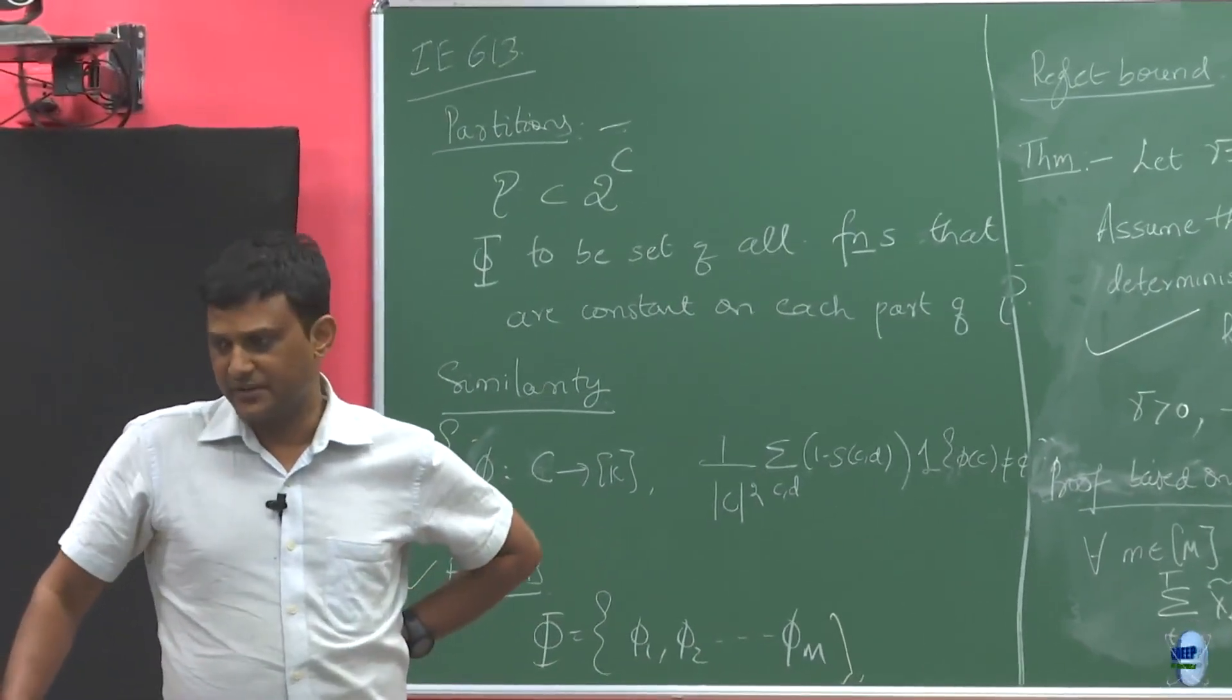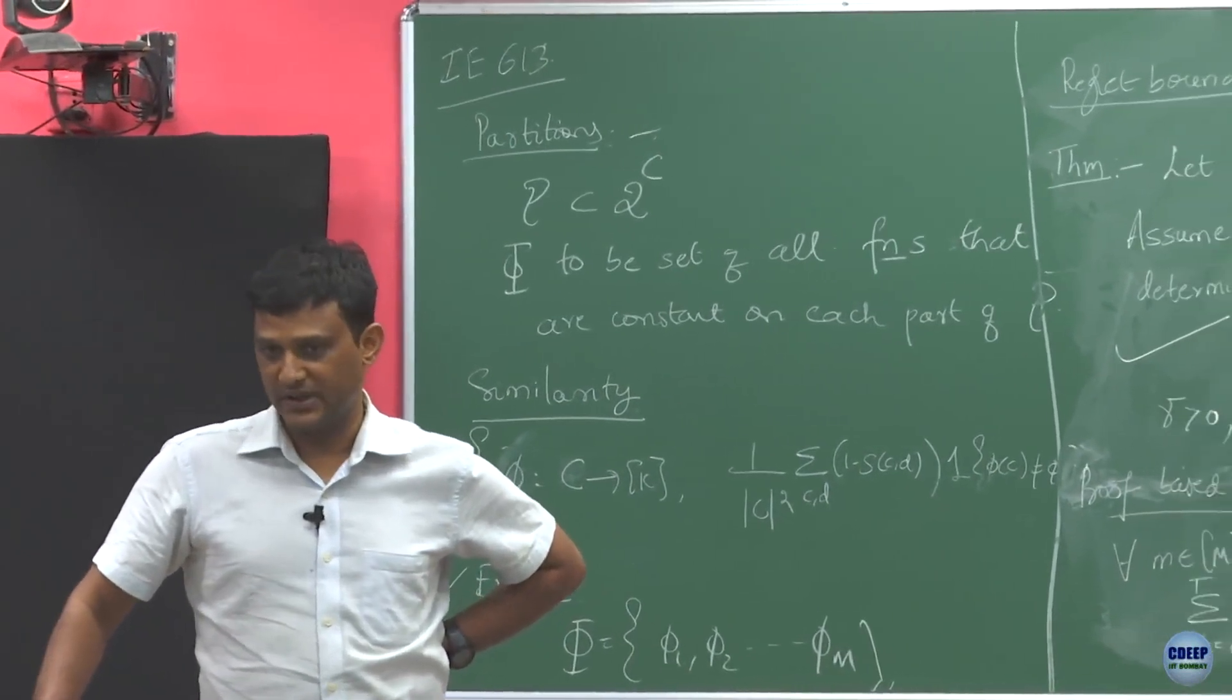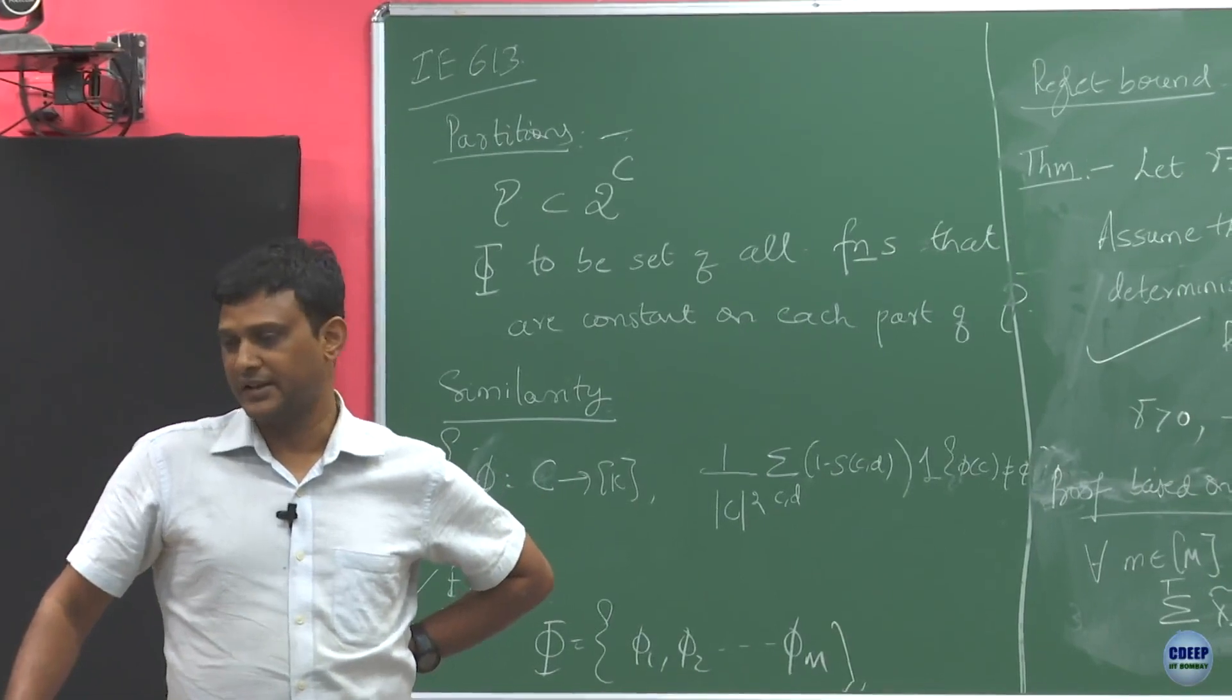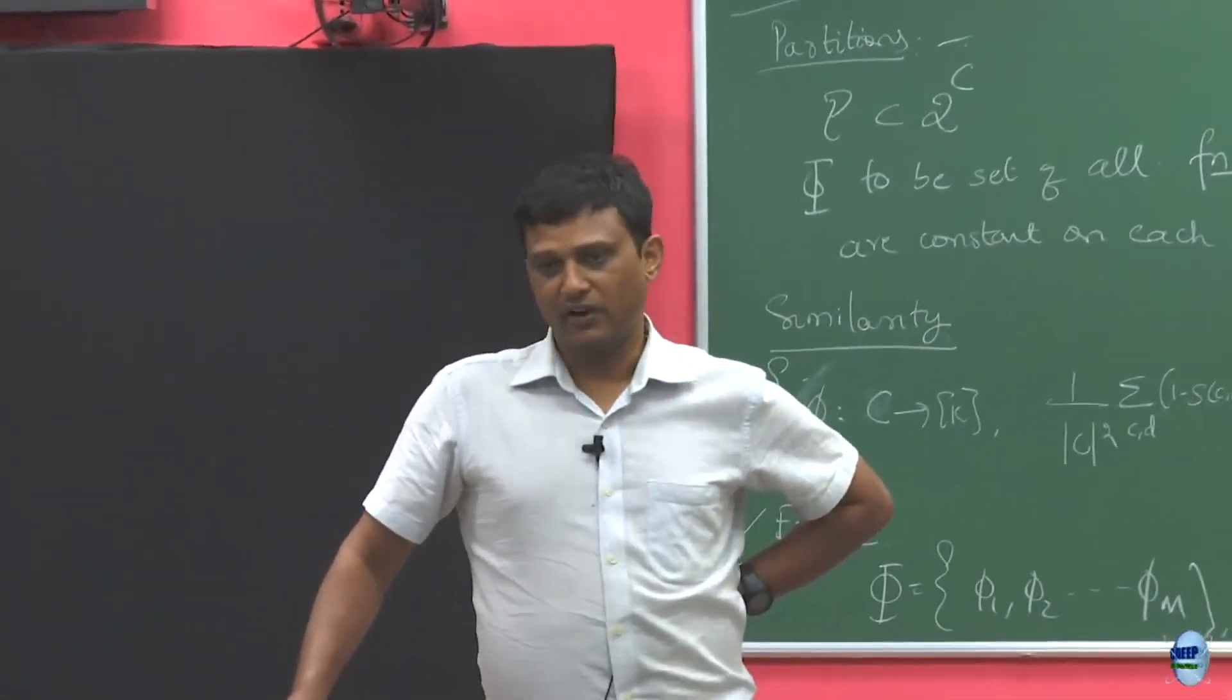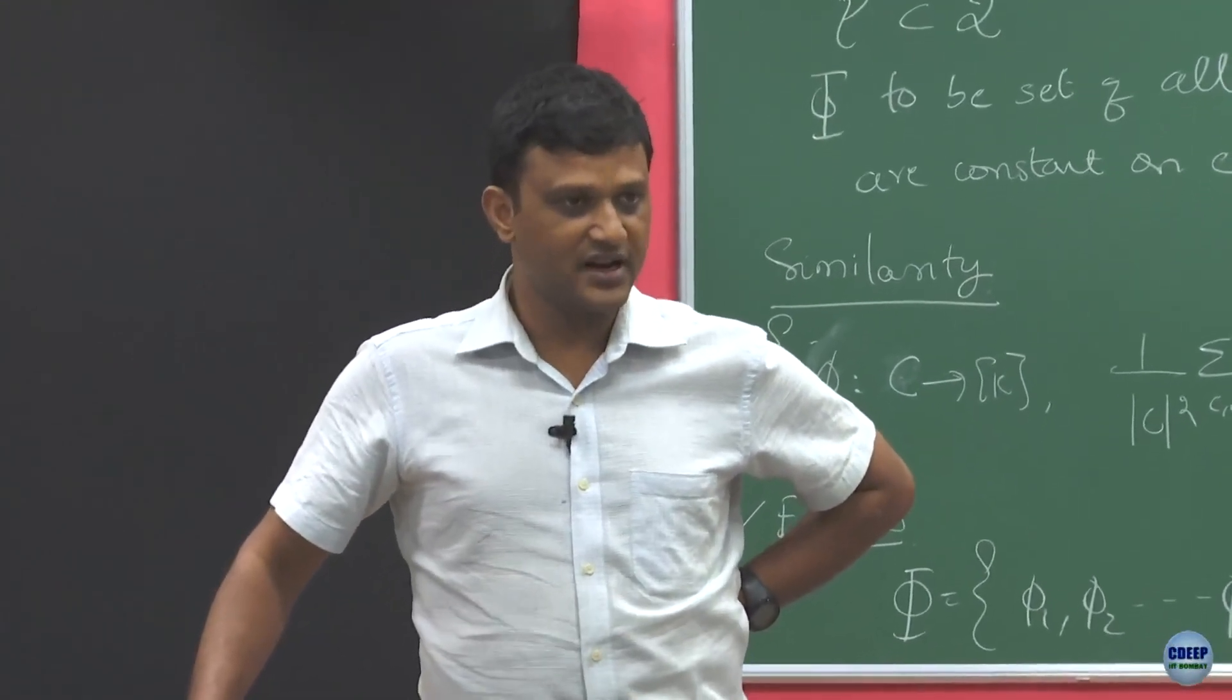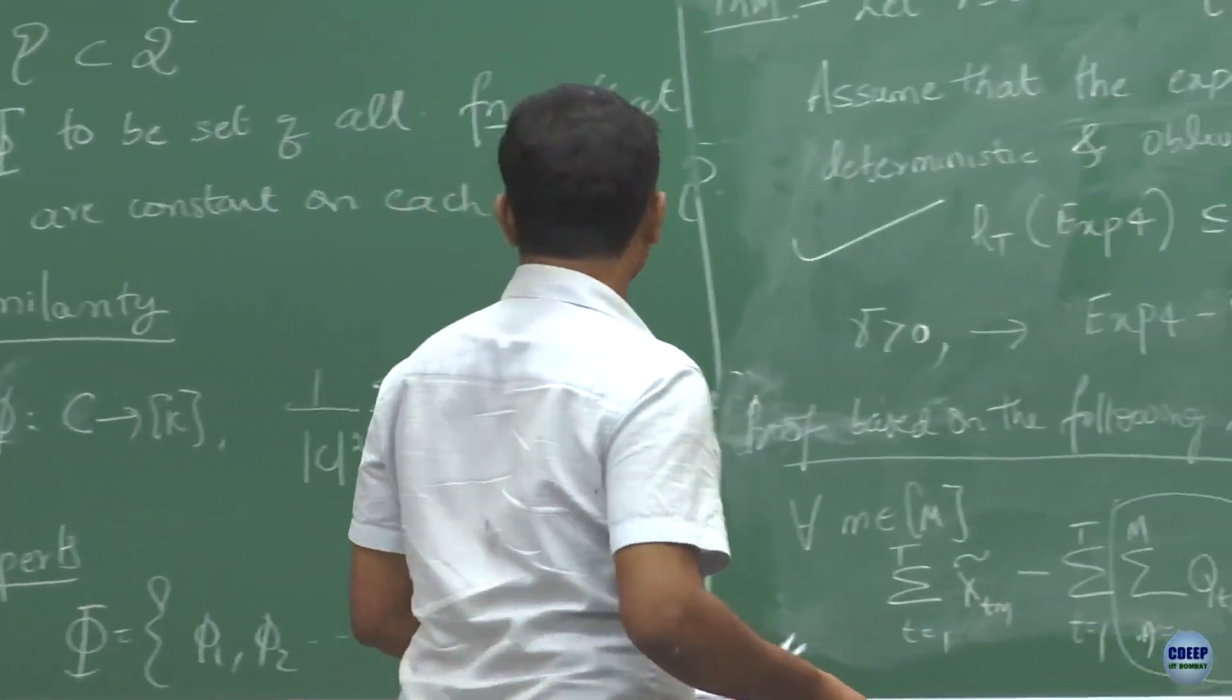We will just skip it. Most of the proofs are very similar to what is there in EXP3 again. The ideas are all similar except for the fact that now we have to take into account two levels of randomization. One with respect to the experts selection and another with respect to the arm selection.